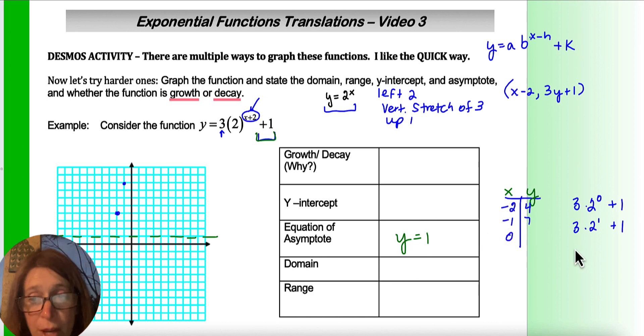If x is 0, we get 3 times 2 to the 2 plus 1. So 4 times 3 is 12, plus 1 is 13. So 0, 13 is that point. So plugging in points, I actually find, so it's up here somewhere, I find to be easier for these.